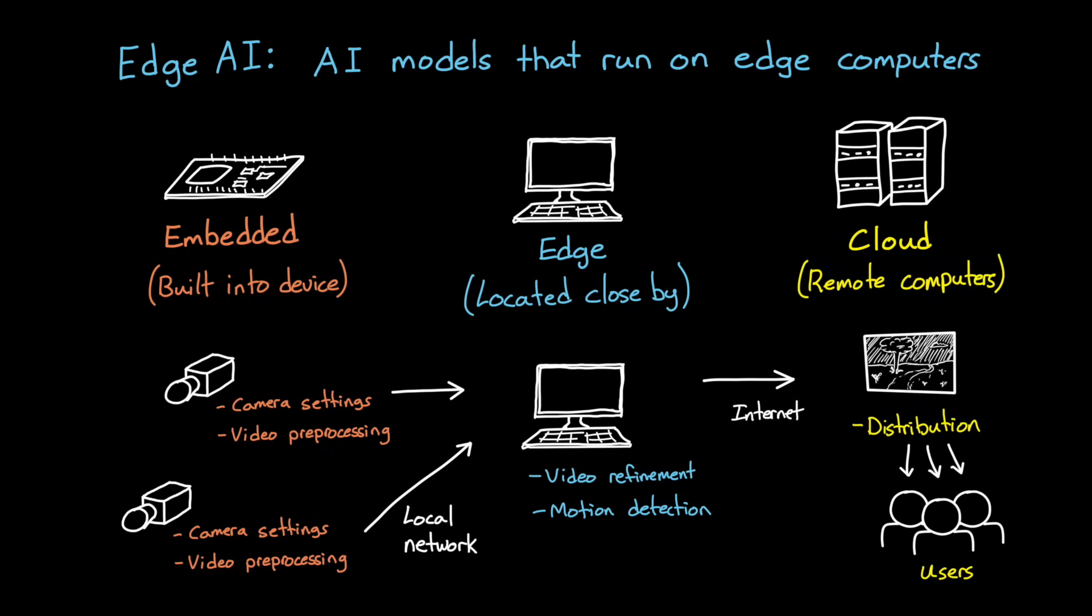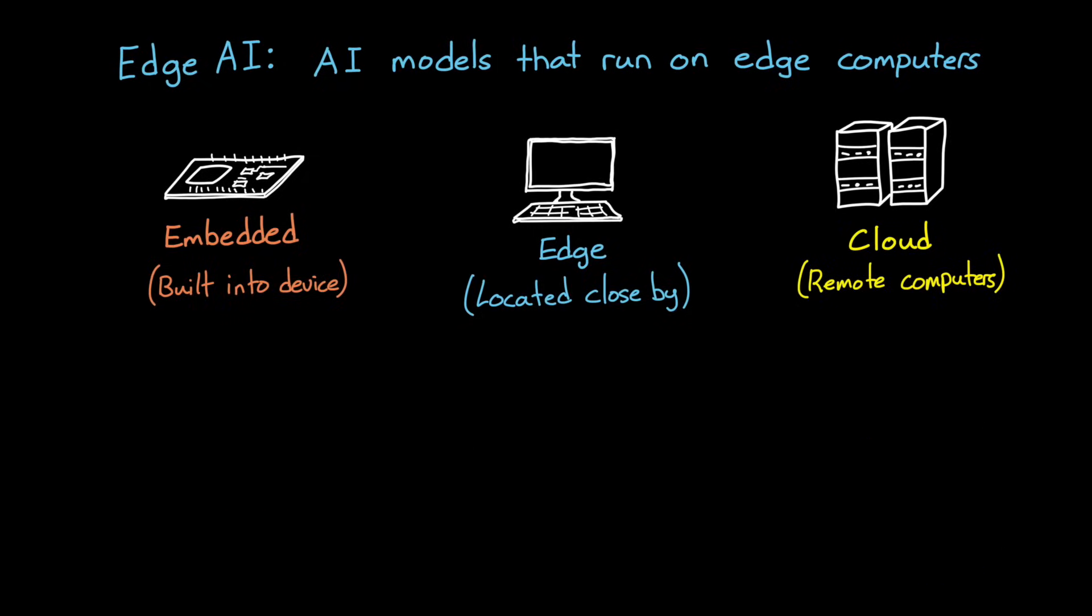So we have a choice of where we want to run non-AI software components in our system, and similarly, we have that same choice when it comes to where to run our AI models. And here, by the way, I'm not talking about where we're going to train an AI model. I'm only talking about using a trained model for inference. Do we want the model to run in the cloud? Do we want it to run on the edge or embedded in the device?